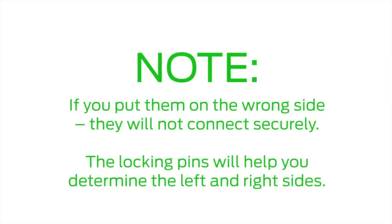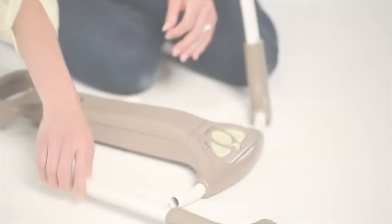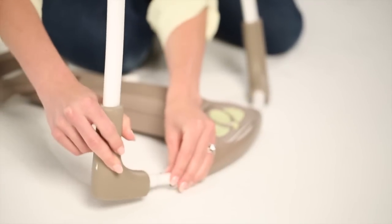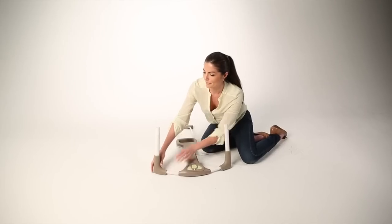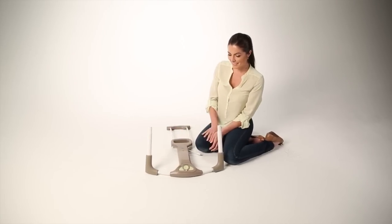Note, if you put them on the wrong side, they will not connect securely. The locking pins will help you determine the left and right sides. These two L-shaped tubes will form a U-shape once they are properly installed. You will hear a click once each side is properly connected.